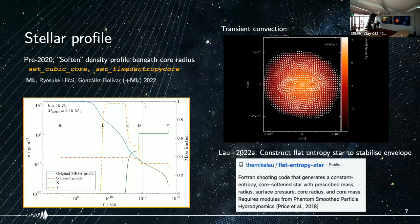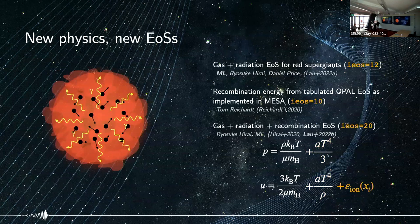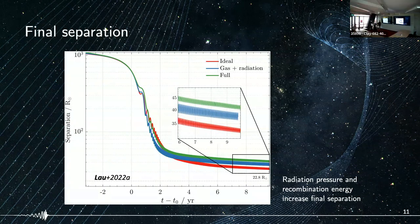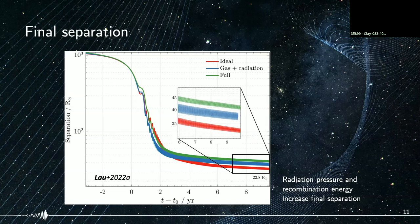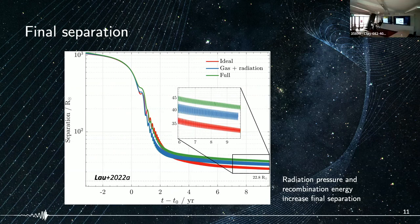We have implemented several equations of state for simulating red supergiants: one including gas and radiation, one including recombination energy tabulated from MESA (implemented by Tom), and more recently analytical fits of recombination energy. The choice of equation of state plays a role in the final separation of the stellar cores — with recombination energy included, the envelope is less tightly bound, so the cores need to in-spiral less to eject it.